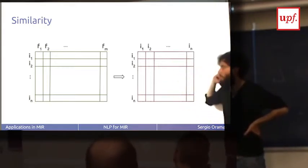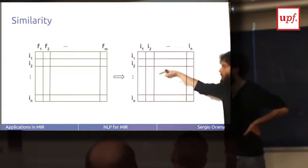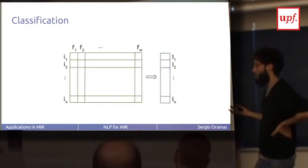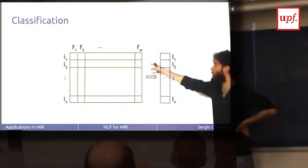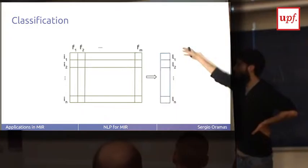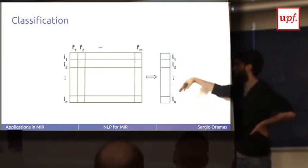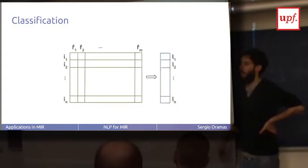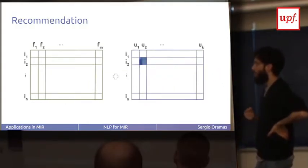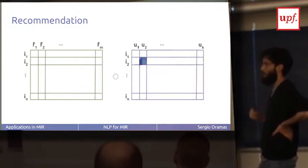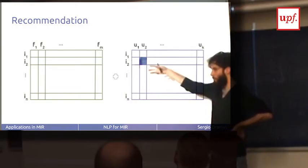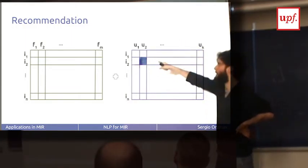These three tasks have something in common, I will explain. In a similarity problem, you have in the input a matrix of items and features. Then the idea is to get a matrix of items and items, where the cells in the matrix express the similarity between the items — a similarity matrix. You measure in different ways the similarities between the different items and represent them as a similarity matrix.